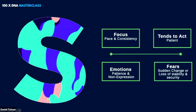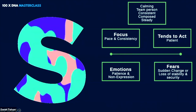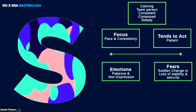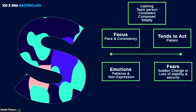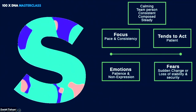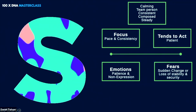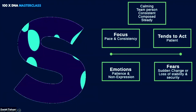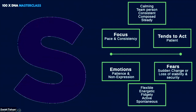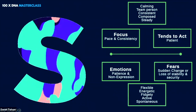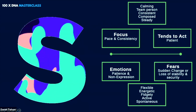Now, if you're a high S style, these are some words that may describe you. When it comes to steadying the pace of the environment, you could come across as calming, a team person, consistent, composed, and steady. Perhaps you're a low S style — you'll be more flexible, extremely energetic, fidgety, active, and spontaneous.